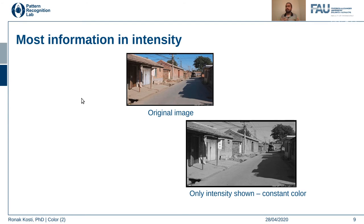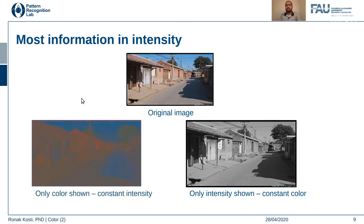From an evolutionary perspective, it was really important for us to see in the dark to avoid being attacked by predators that hunt at night, so we developed more rod cells to help navigate in darkness. For a constant intensity, if only the color channels are shown, you can clearly see that we don't get really interesting or important information from the color channels alone — which is why using RGB with equal weights for all channels is questionable.